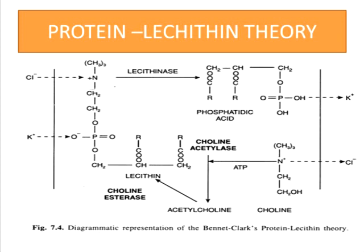The complete lecithin molecule, when combined with anion and cation, moves inside and then releases phosphatidic acid and choline due to the action of the enzyme lecithinase. Cations and anions are now released into the inner space. The lecithin is then regenerated from the phosphatidic acid and choline by the enzyme choline, involving the participation of ATP.